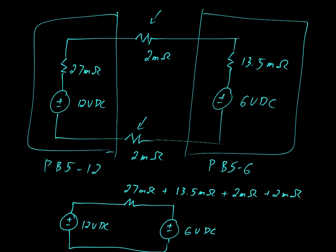Representing the internal resistance of the 12 volt battery, the 6 volt battery, and the wire. And when you do that, we can say that the resistance is equal to 44.5 milliohms.